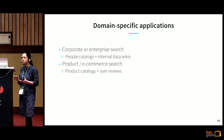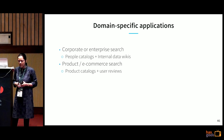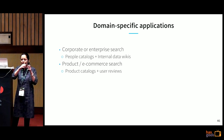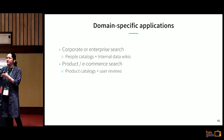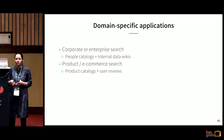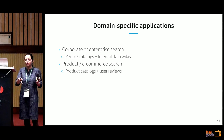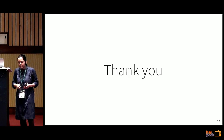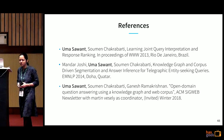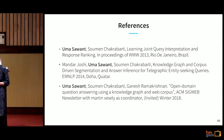This approach applies beyond open-domain scenarios. For corporate or enterprise search, you have corporate hierarchies of teams, managers, and peers, plus internal wikis and documents as plain text — you can use both together for better enterprise search. Similarly, for product or e-commerce search, you have a product catalog combined with user reviews. These are the papers that came out of this research — feel free to look at them if you are interested in more details.